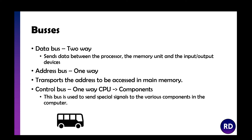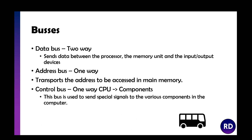Buses transfer data around the computer. The data bus is a two-way bus that sends data between the processor, the memory unit, and the input and output devices. The address bus is one-way and transports the address to be accessed in main memory. The control bus is one-way from the CPU to the components and sends special signals to the various components in the computer.